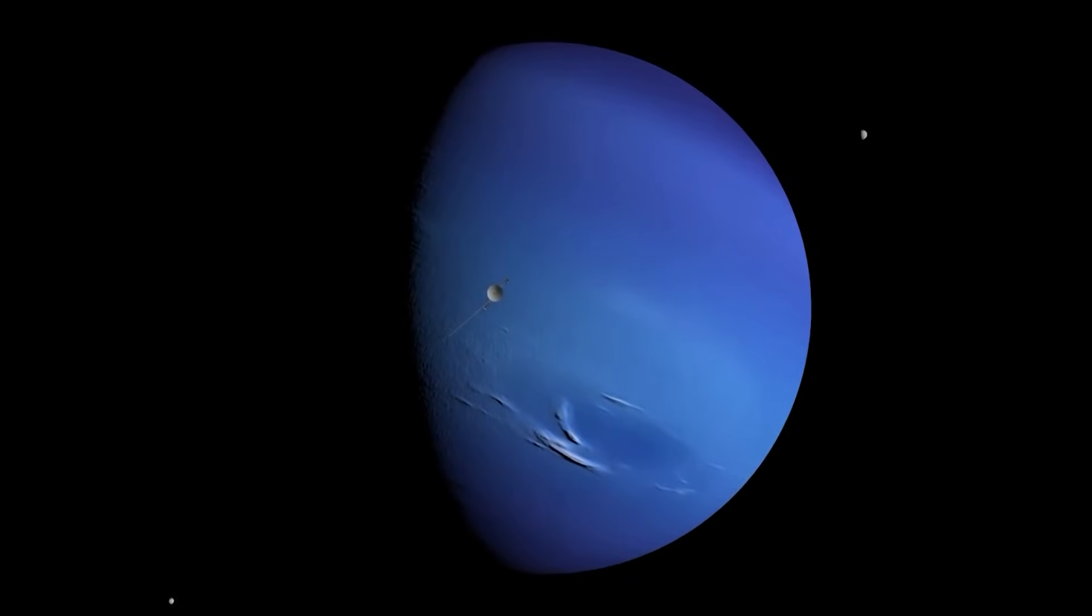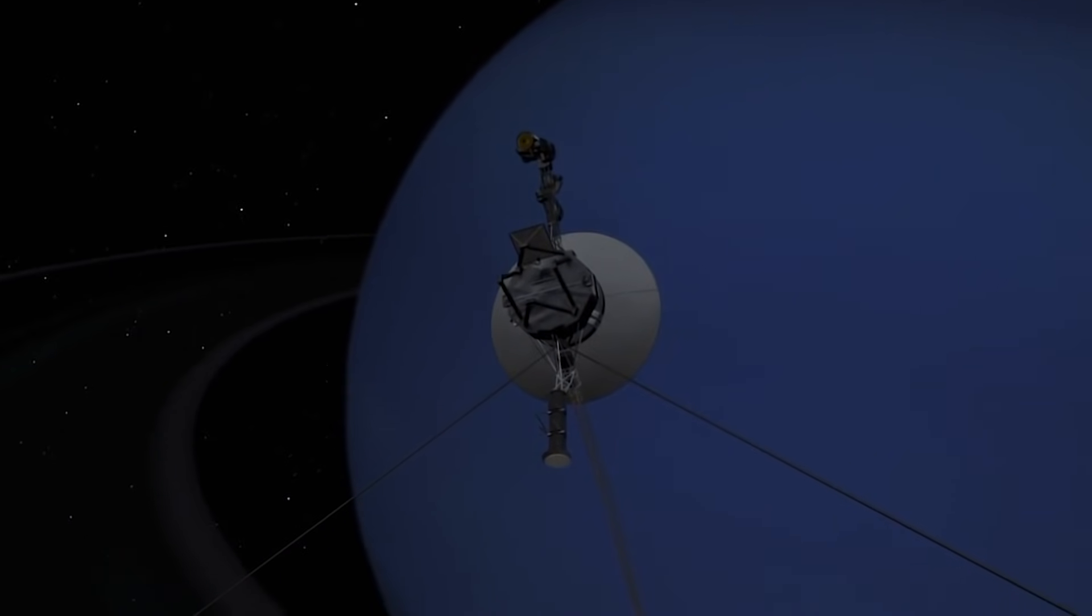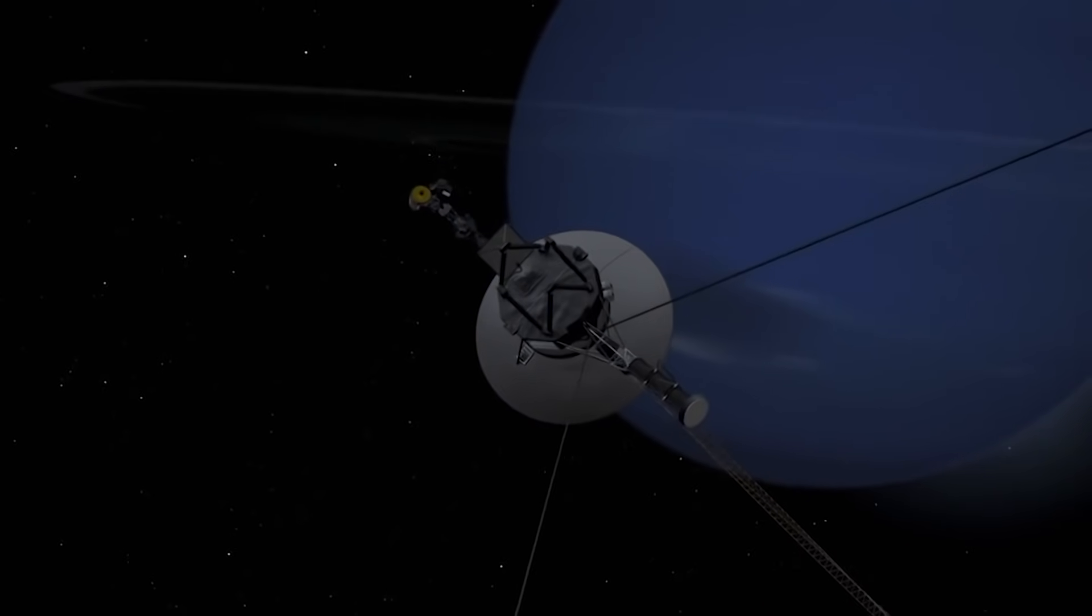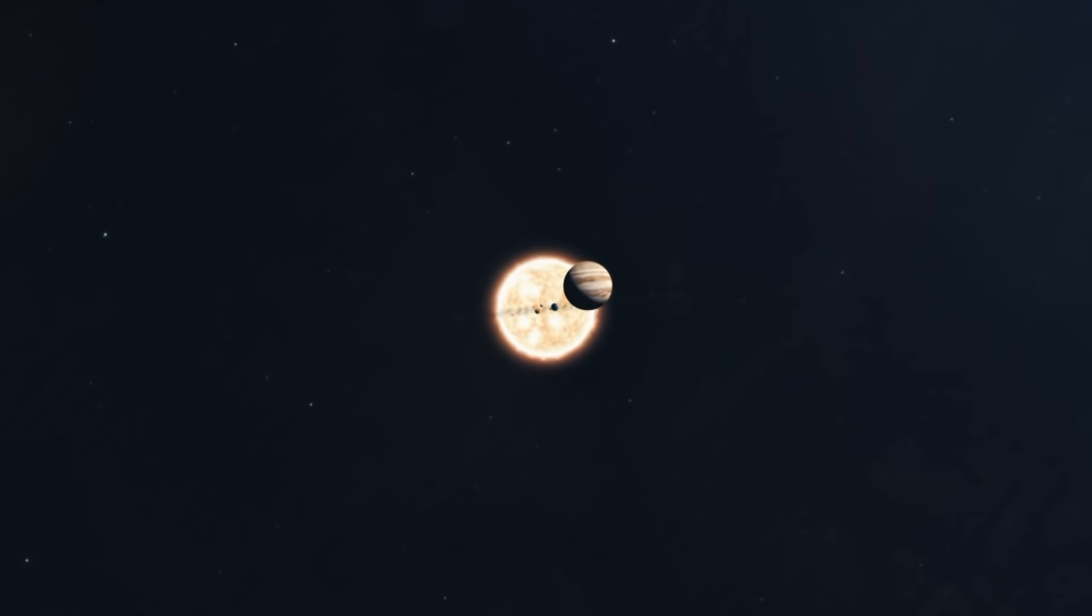The gravitational influence of Neptune changed Voyager 2's trajectory, making it leave its ecliptic plane. The probe lost its chance to approach other objects in the solar system. However, it hadn't run out of opportunities quite yet.